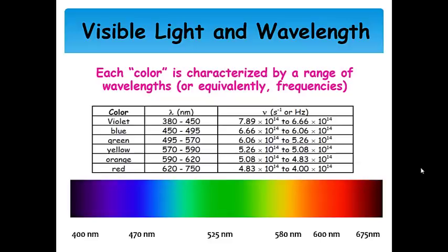There are various wavelength ranges for the different colors of visible light. Violet has the shortest wavelengths out of the ones that we can see, between 380 and 450 nanometers. Blue is a little bit longer, green longer than that, yellow longer than that, orange, and then finally red has the longest wavelengths. Then we start going into the infrared part of the spectrum.